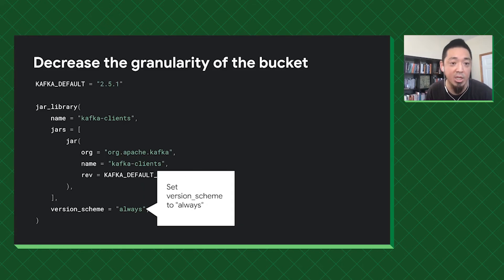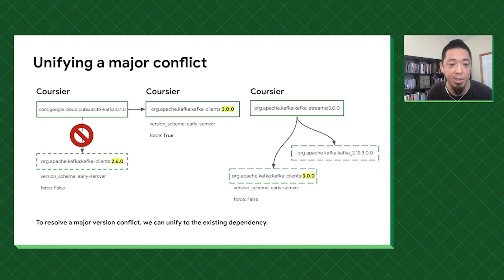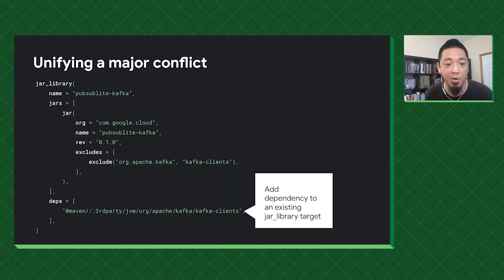The other way is to decrease the granularity by setting it to 'always', in which case everything gets bucketed into a single bucket. But we don't really want to use that because it's a strong claim that all versions are interchangeable. A more conservative approach is something called unification, where we exclude a specific version from a particular target. For example, for pubsub_lite we can exclude Kafka 2.6 and then manually point to Kafka 3.0. I sometimes call this graph stretching because we're stretching the graph sideways. In the build file, you add the exclusion for kafka-clients and then add the dependency pointing to the tracked version.